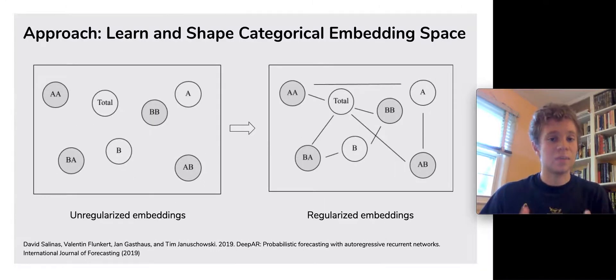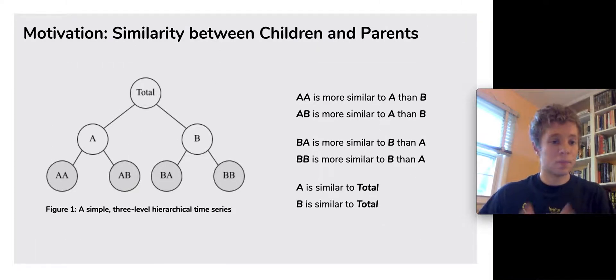Our approach builds off of the DeepAR model by adding a regularization term that shapes a learned embedding space. This term penalizes the distance between parent series and their descendants at the bottom level of the hierarchy. Following DeepAR, these embeddings are concatenated with other features prior to the recurrent component of the model. The motivation behind this term is the assumption that children are more similar to their parents than to other series in the hierarchy.